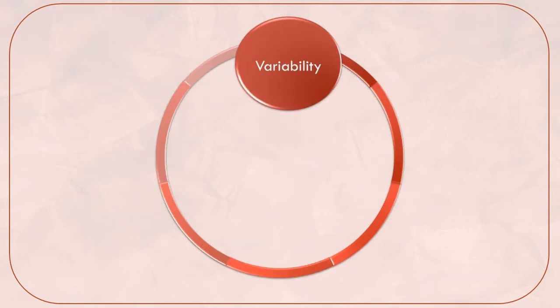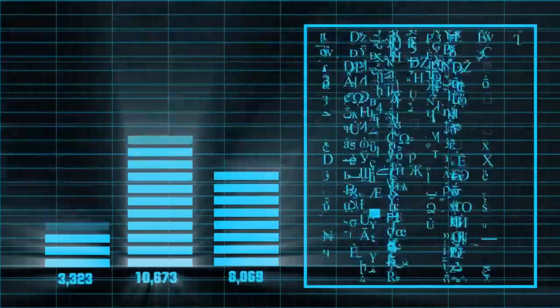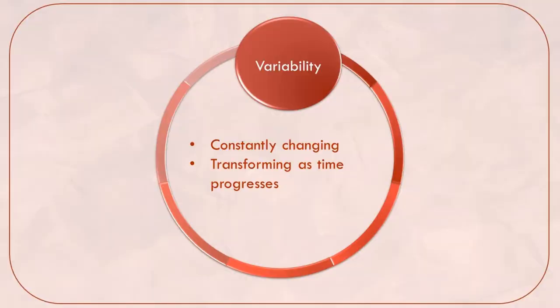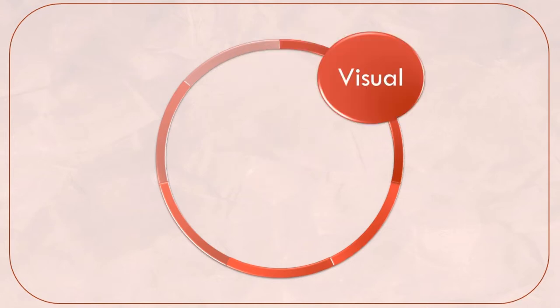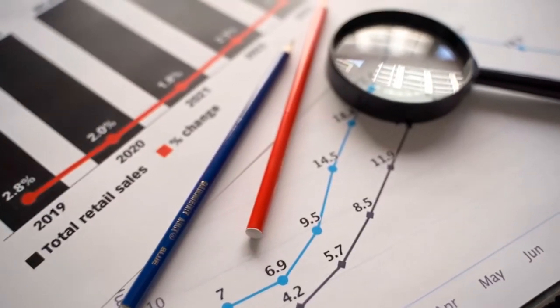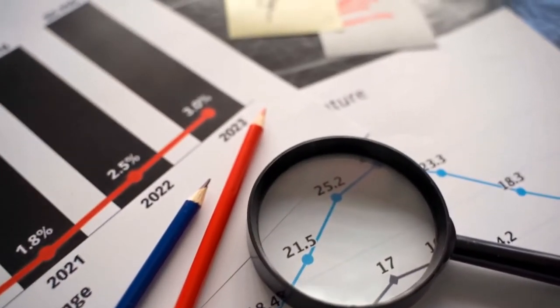Variability means that data is very variable and is constantly changing. Even data sets can be variable, ranging from low values to high values, changing as time progresses. Visualization means translating data such as percentages, figures, variances, trends, and other data into graphs, charts, diagrams, and visual exhibits.